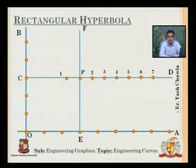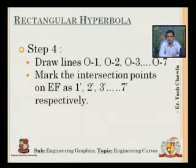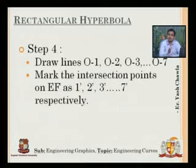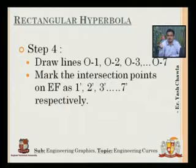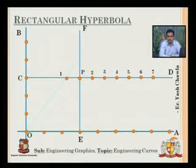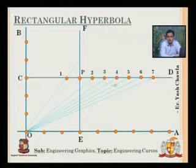Step four: I'm going to draw lines from the origin O — that is, from the point of intersection of OA and OB — connecting O1, O2, O3, O4 up till O7. The points where they intersect the vertical line EF passing through the given point (3,3) will be marked as 1', 2', 3', 4', 5', 6', and 7'. From O, I pass the line through point one and intersect axis EF, then do the same for O2, O3, O4, O5, O6, O7.